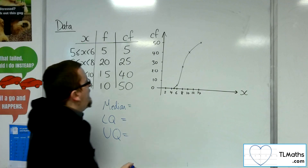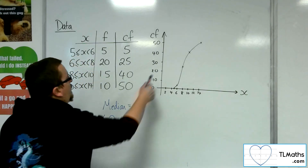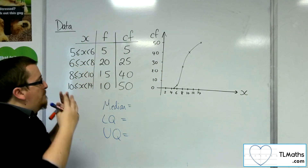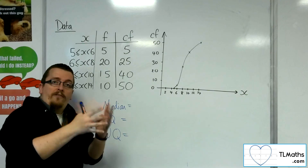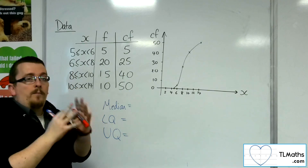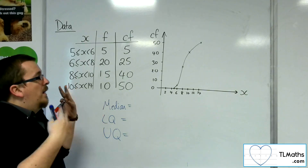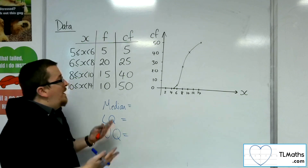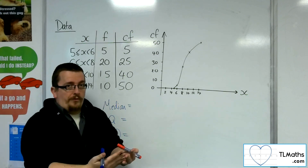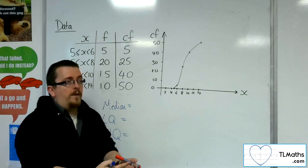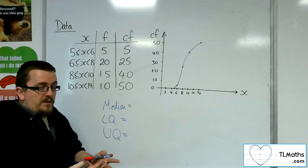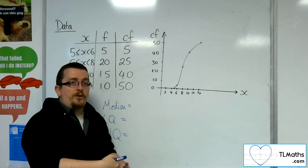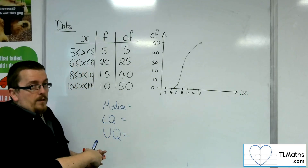For the median value, you're looking at the cumulative frequency and looking halfway up that line. From 0 to 50, halfway is 25. When working with grouped frequency, you take the total frequency and divide by 2 to find the position for the median value.